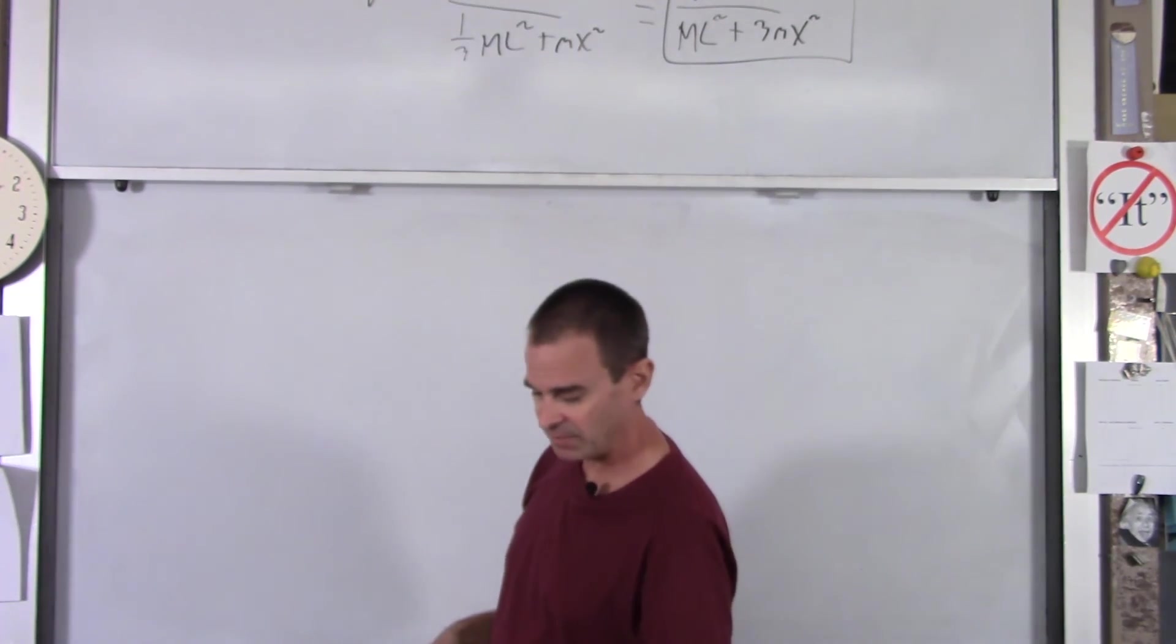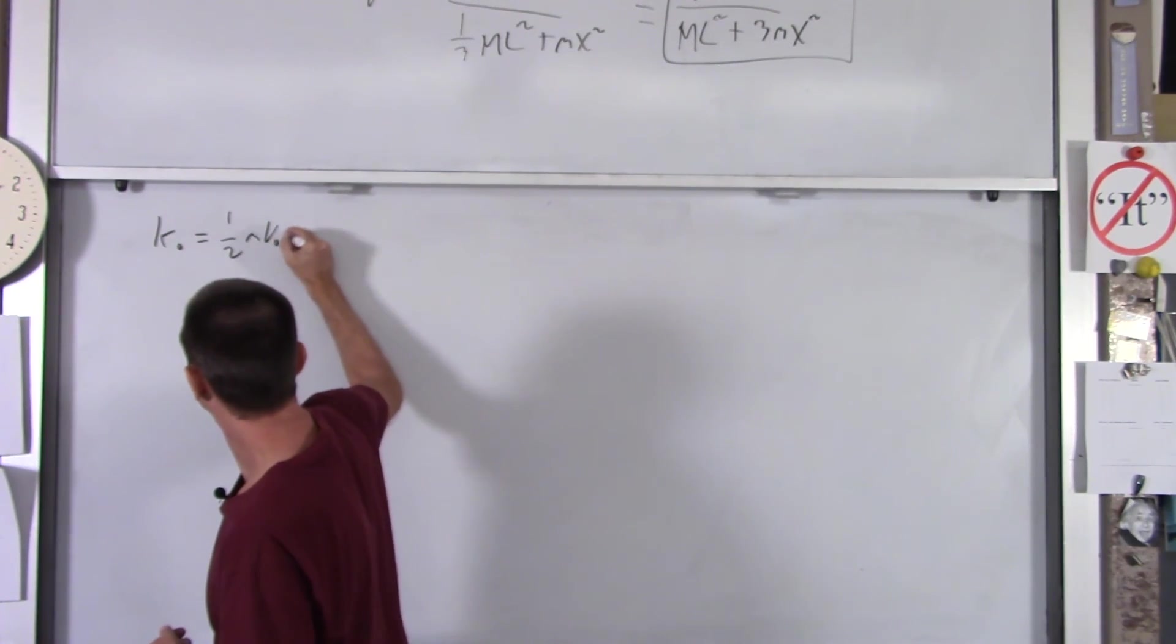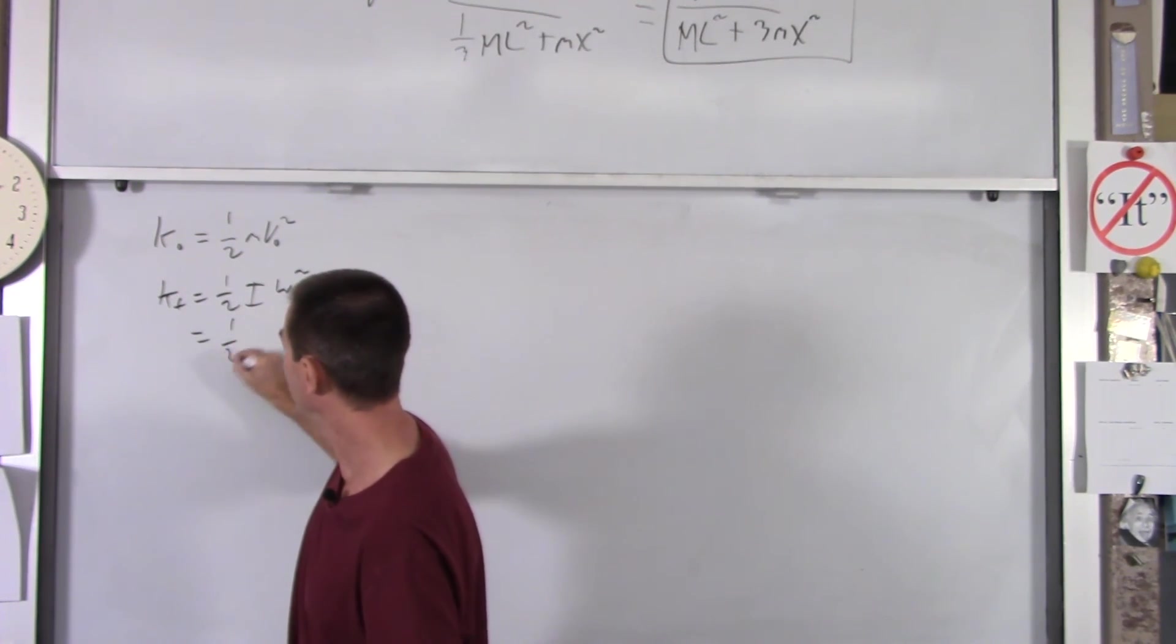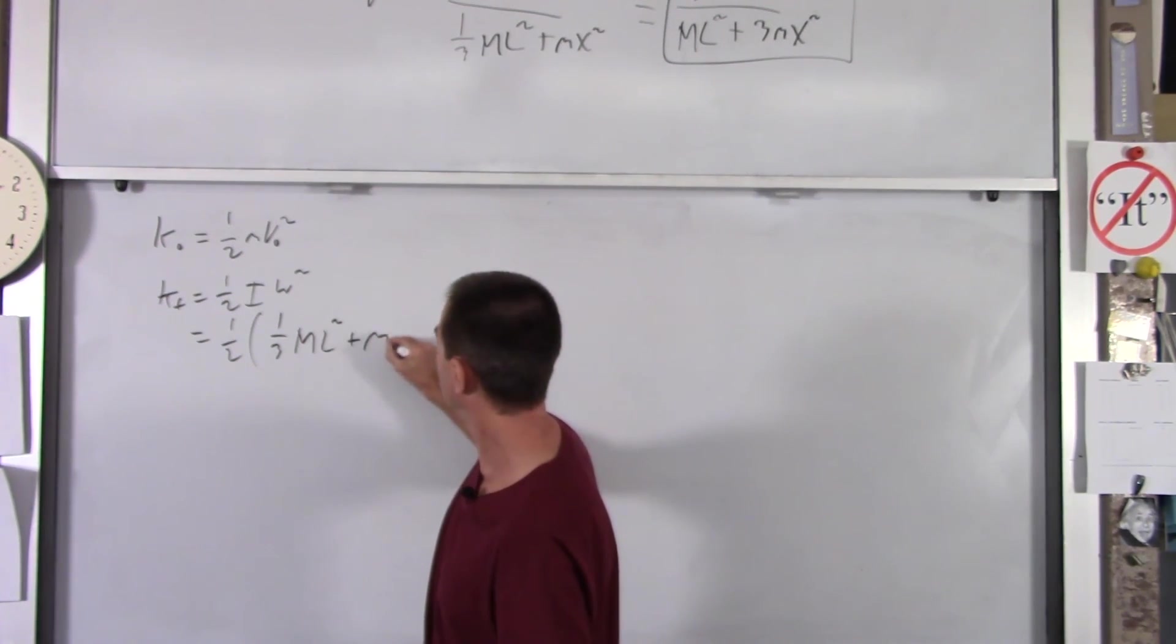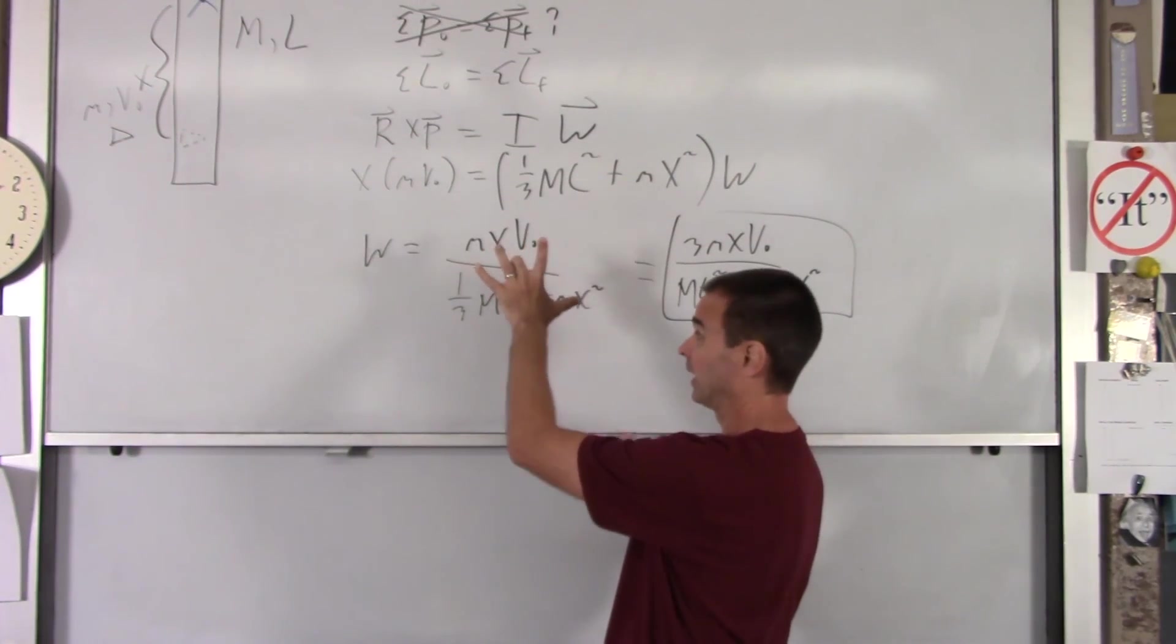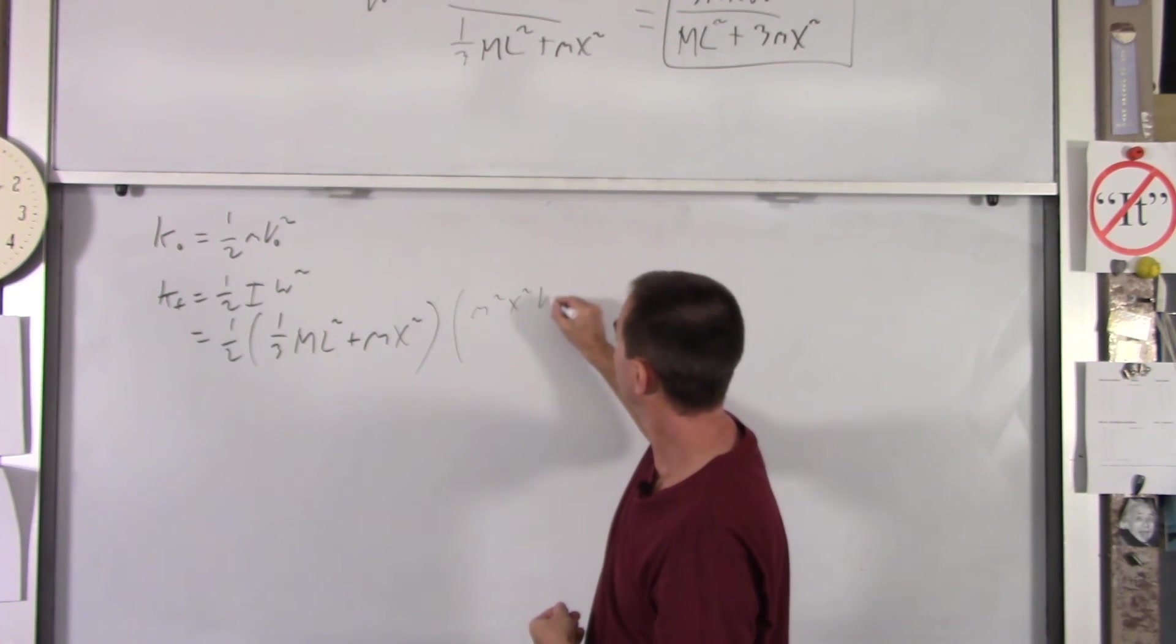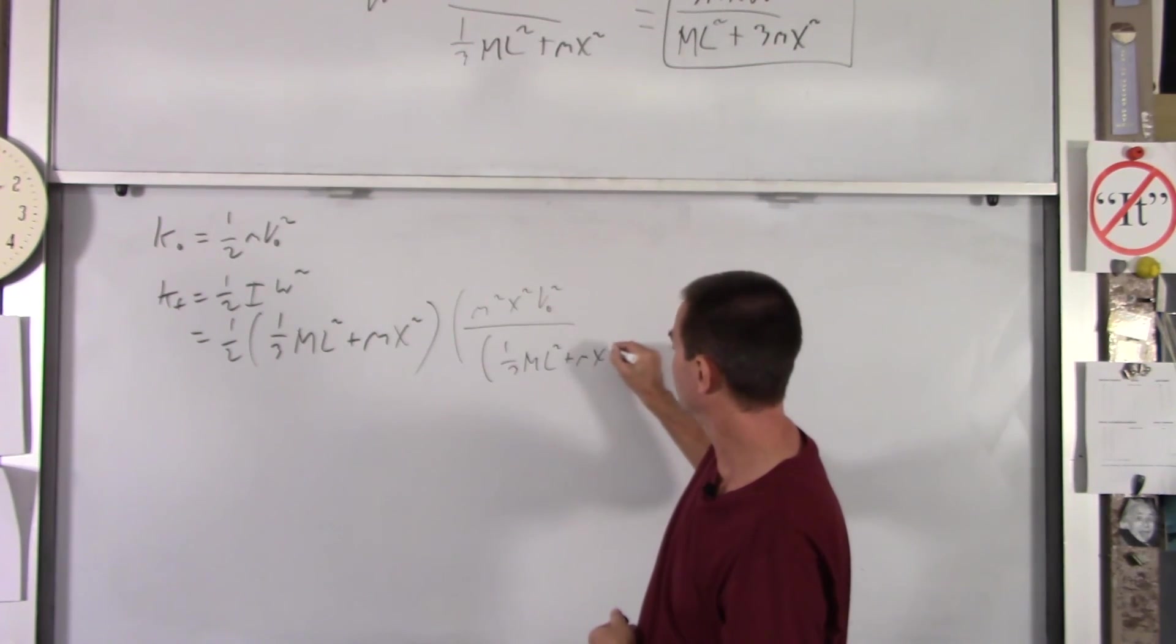Well, k-naught was 1/2 m V0 squared. K-final, well, now it's a rotating system. So k-final is 1/2 i omega squared, which is 1/2 i was the whole thing, 1/3 big M L squared plus little m x squared. And then omega squared. So what I'm going to do is I'm going to take this expression and I'm going to square, for the top I'm going to square each part, for the bottom I'll just square the whole thing. So you got m squared x squared V0 squared over 1/3 big M L squared plus m x squared squared.